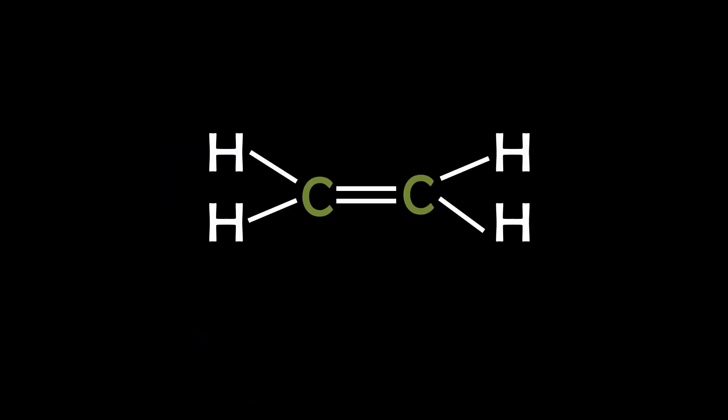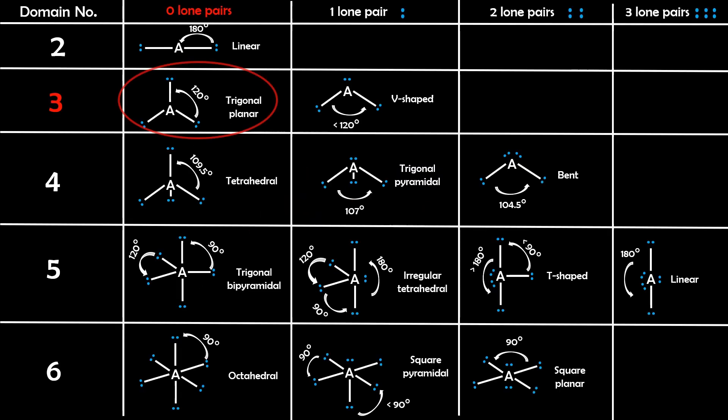Example 5: Ethene. Each carbon in ethene is double bonded to the other carbon and has two single bonded hydrogens. Around each carbon, there are three electron domains, resulting in a trigonal planar geometry.